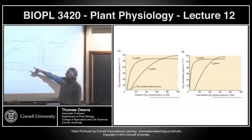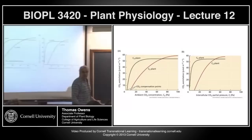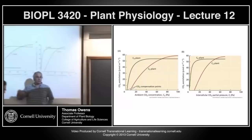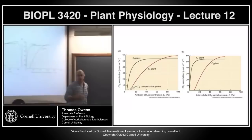C4 plants have a lower compensation point than C3 plants because they have an enzyme with much higher affinity for CO2 — PEP carboxylase — compared to RuBisCO in C3 plants. We also saw that the internal CO2 in a C4 plant is drawn down much more than the internal CO2 in a C3 plant, again because RuBisCO has such low affinity for carbon dioxide.